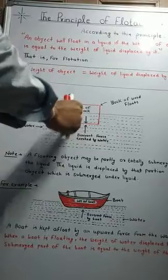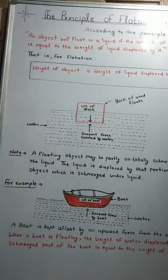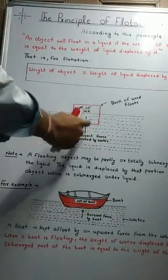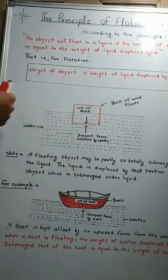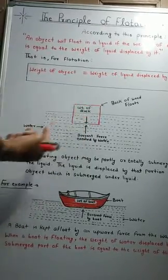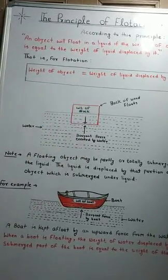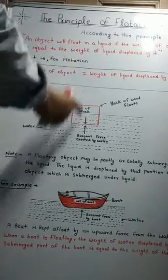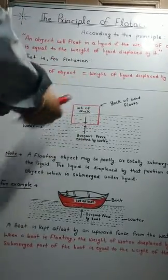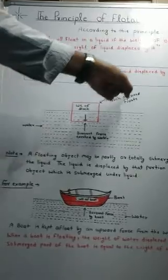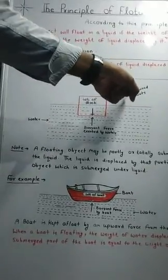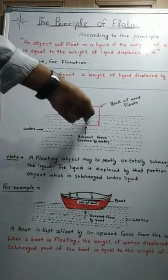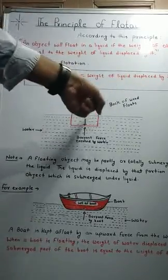First, there is the weight of the block acting downward. Second, when the block is in a liquid, there will be a buoyant force acting upward. When these two forces act in opposite directions, the block floats. You can see the block float along this path.